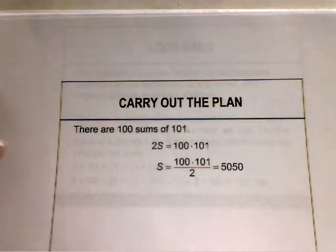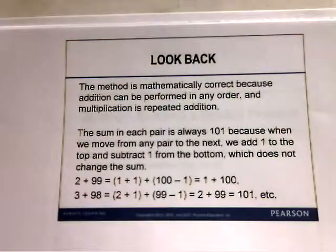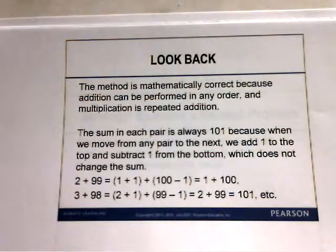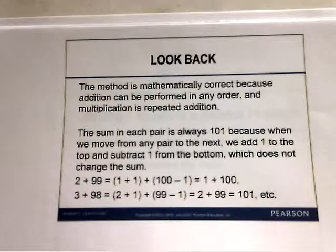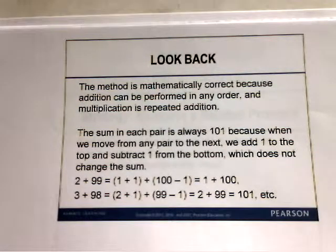Then we look back. The method is mathematically correct because addition can be performed in any order and multiplication is considered to be repeated addition. The sum in each pair is always 101 because when we move from any pair to the next, we add 1 to the top and subtract 1 from the bottom, which does not change the sum. So 2 plus 99 equals 1 plus 1, plus 100 minus 1, which equals 1 plus 100. And 3 plus 98 equals 2 plus 1, plus 99 minus 1, which equals 2 plus 99 equals 101, and so on.